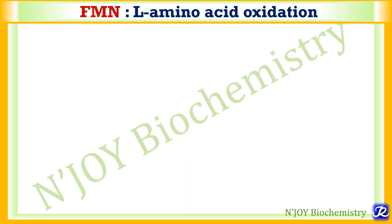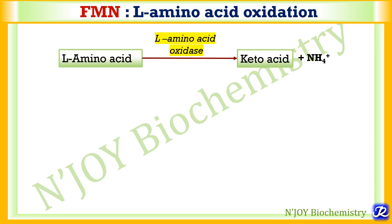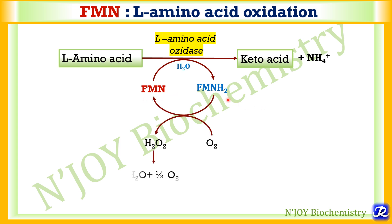FMN has a role in L-amino acid oxidation. It is a minor pathway for ammonia formation, which metabolizes L-amino acids using FMN as a coenzyme. By the action of L-amino acid oxidase, there is formation of keto acid and release of ammonia, requiring reduction of FMN to FMNH2. To bring FMNH2 back to its FMN form, molecular oxygen is required, which is converted to hydrogen peroxide, then to water and oxygen. Because hydrogen peroxide is generated, this reaction is called a pro-oxidative reaction.